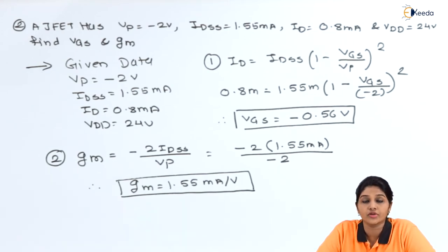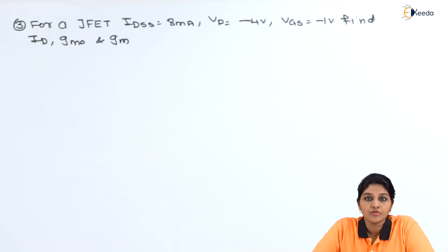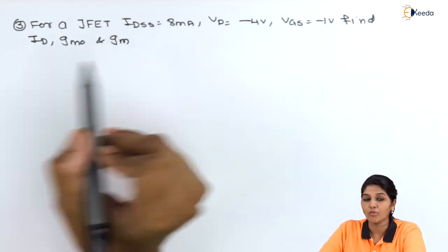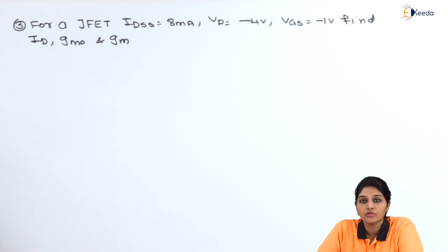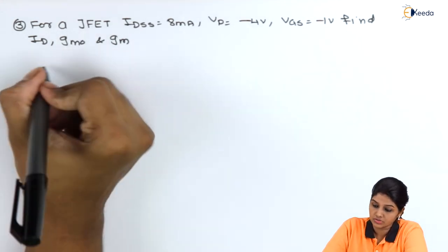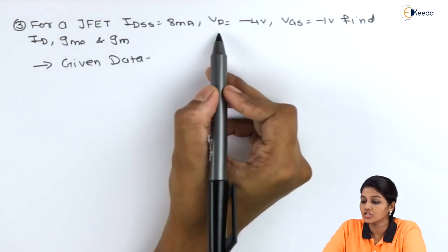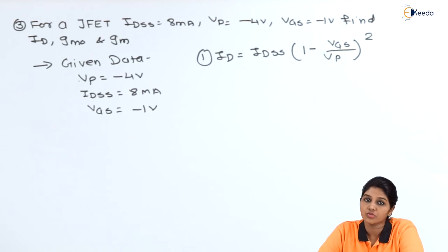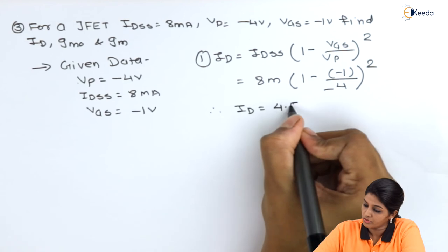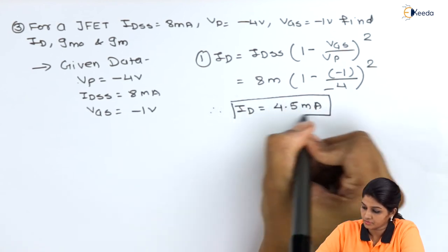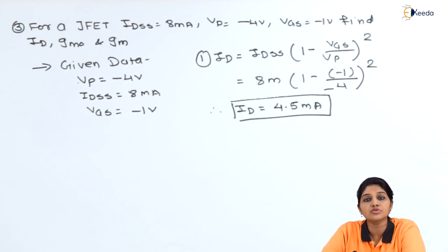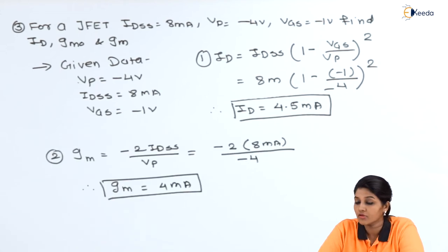The third problem: For a JFET, IDSS = 8 mA, VP = −4 V, VGS = −1 V. Find ID, GMO, and GM. Using the formula ID = IDSS × (1 − VGS/VP)², the value of ID is 4.5 mA. For GMO, using GM = −2·IDSS / VP, we obtain GM = 4 mA/V. These are the key calculations for finding transconductance and drain current characteristics of a JFET.